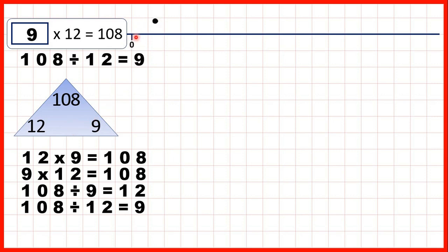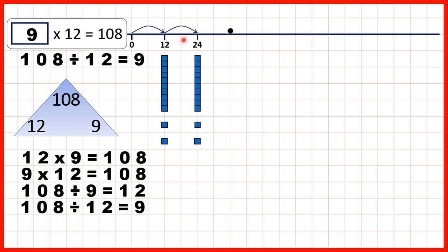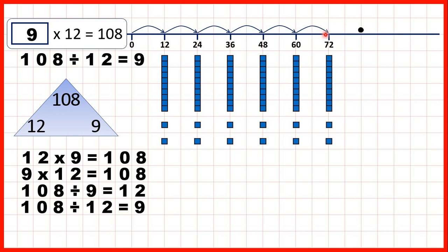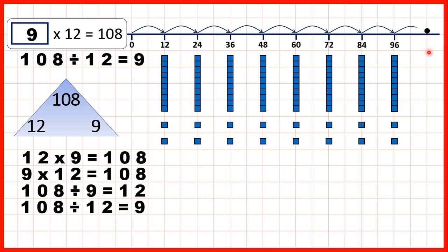We could show this on a number line by counting in jumps of 12. If we keep jumping in 12s, the ninth jump will take us to 108, so 9 is our missing number.